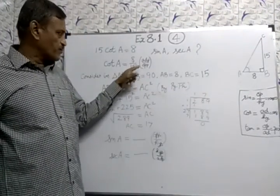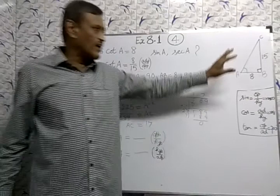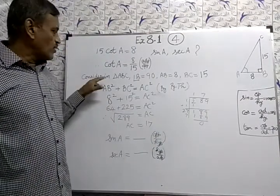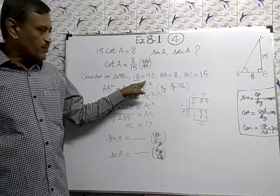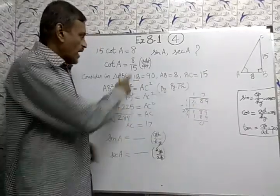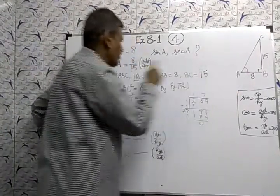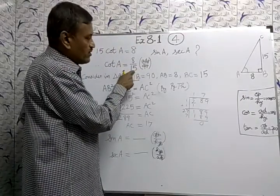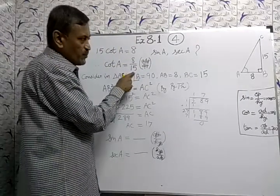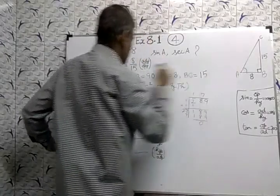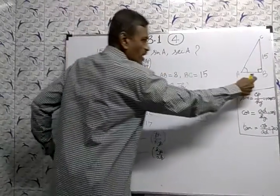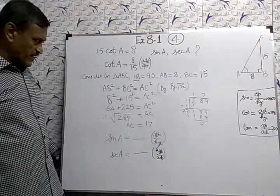Now I draw the triangle. Consider triangle ABC, angle B is 90 degrees. Adjacent side AB is 8, and opposite side is 15. Adjacent is 8 and opposite is 15.